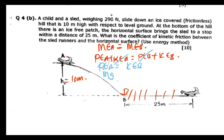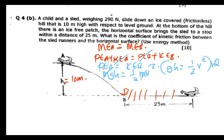All the energy at A is going to be converted to kinetic energy at point B. This gives us MGH equals half MV squared. We can cancel M, so GH equals half V squared. Multiplying both sides by 2, we get 2GH equals V squared, and taking the square root: V equals the square root of 2GH.